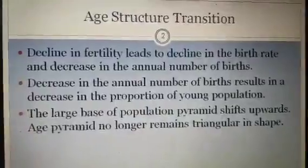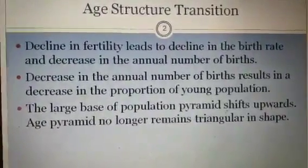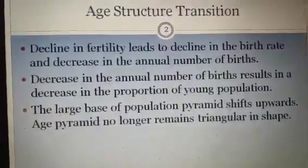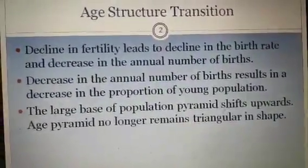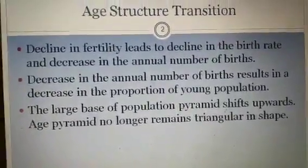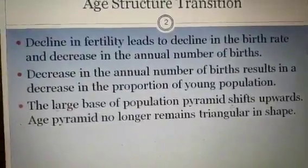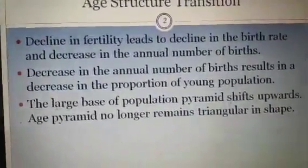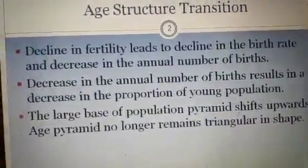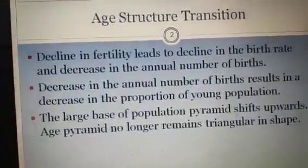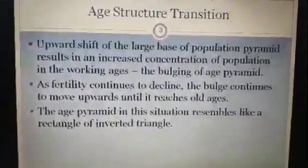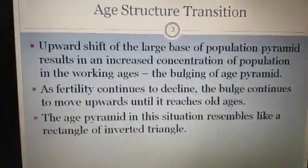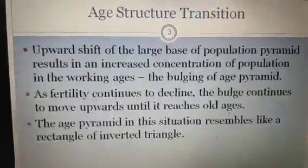We will begin with the age structure transition. We have already studied the demographic transition theory in paper 2nd — that the decline in fertility leads to a decline in the birth rate and a decrease in the annual number of births, which results in a decrease in the proportion of young population. From here the impact begins, and the large base of the population pyramid shifts upwards. Age pyramids no longer remain triangular in shape, and the upward shift results in an increased concentration of population in the working ages — that is the bulging of age pyramids.